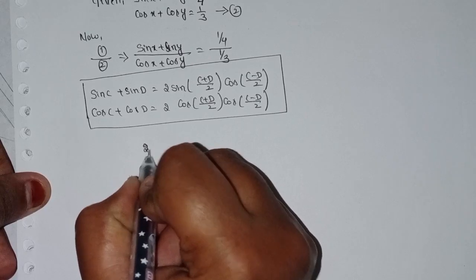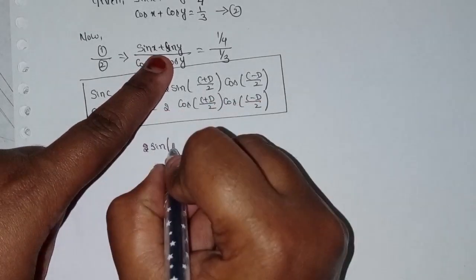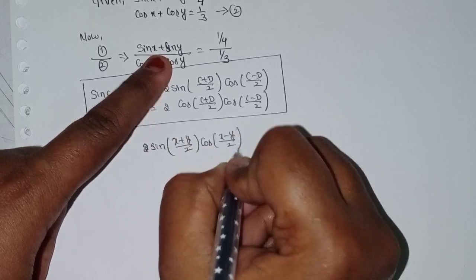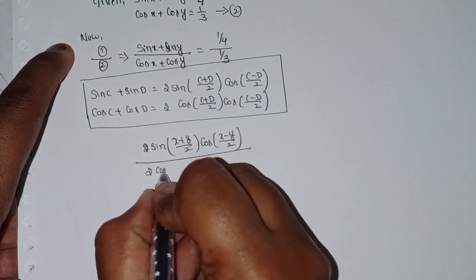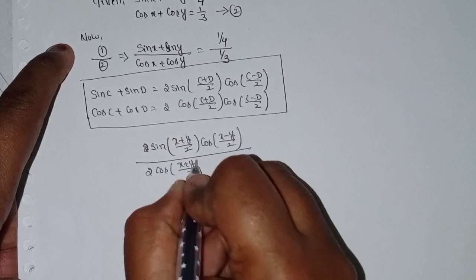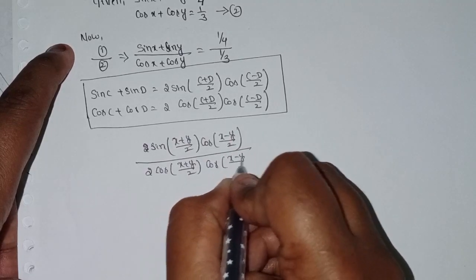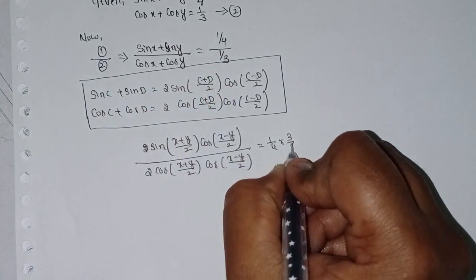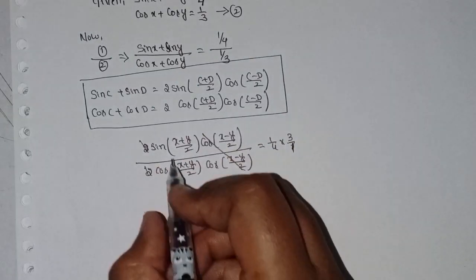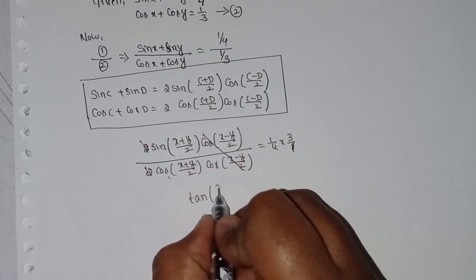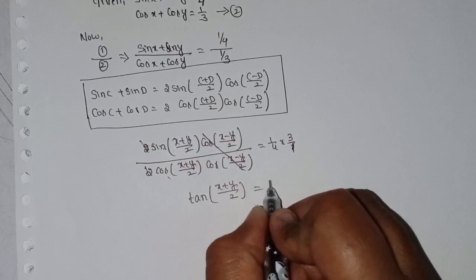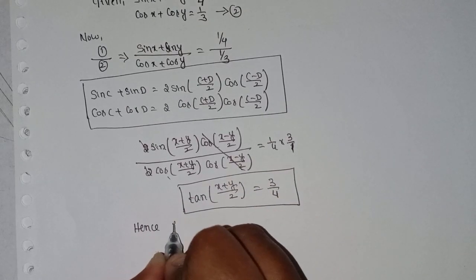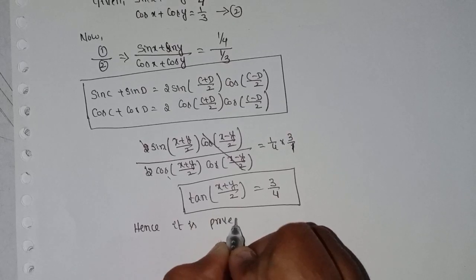Applying the formulas: 2 sin((x plus y) by 2) cos((x minus y) by 2) divided by 2 cos((x plus y) by 2) cos((x minus y) by 2) equals 1 by 4 times 3 by 1. The 2's cancel and cos((x minus y) by 2) cancels. Sin divided by cos means tan, so tan of (x plus y) by 2 equals 3 by 4. First part is proved.